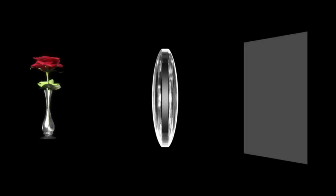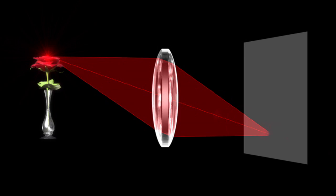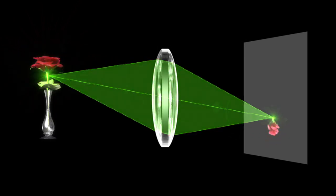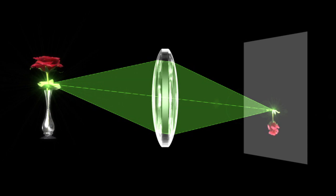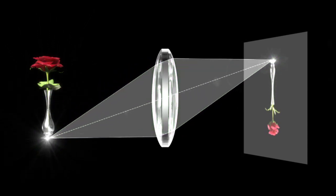Why is an image created when light passes through the lens? Light transmitted from a single point on a flower passes through the lens and meets at a single point. Light transmitted from other points is concentrated in the same way, creating an image.